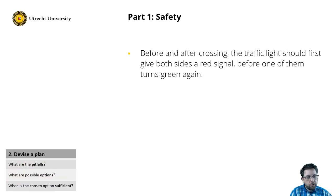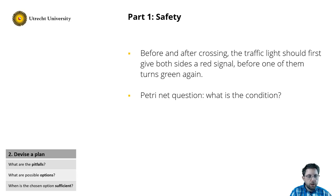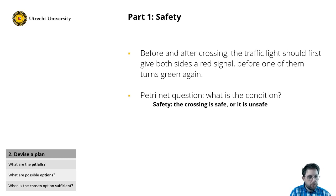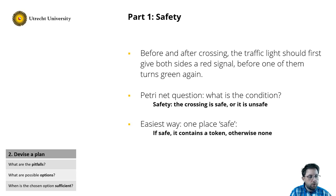A Petri Net consists of conditions represented as places, entities of interest as tokens, and actions that change the conditions. We first ask ourselves: what are the conditions? In this case it is a single condition — either it is safe or it is not safe. So we can model this with a single place. If it contains a token, then it is safe; if it does not contain a token, it is not safe.